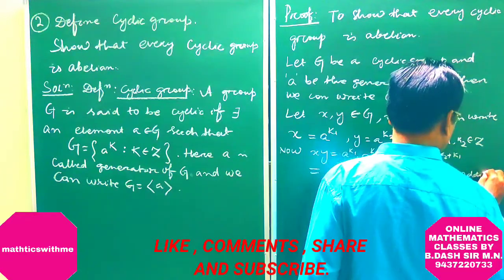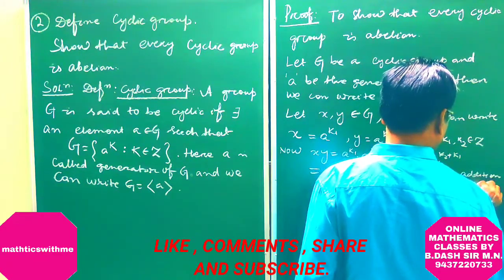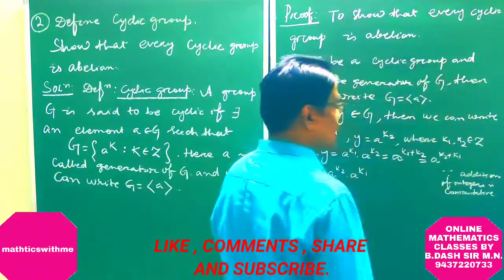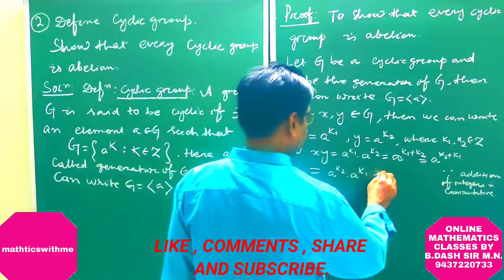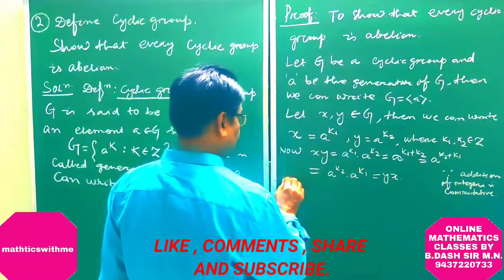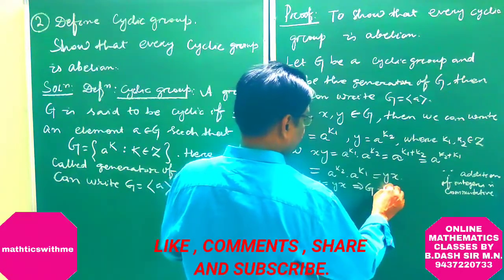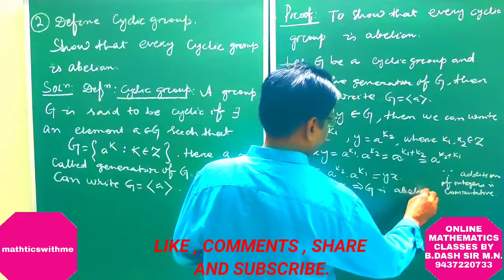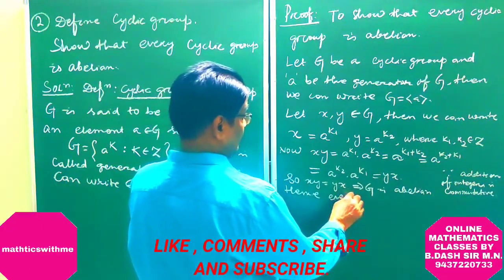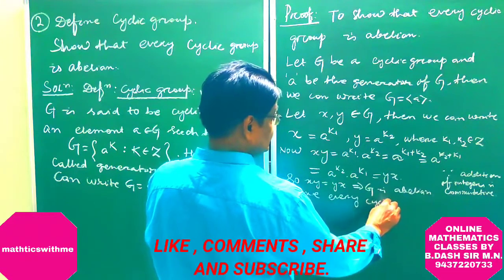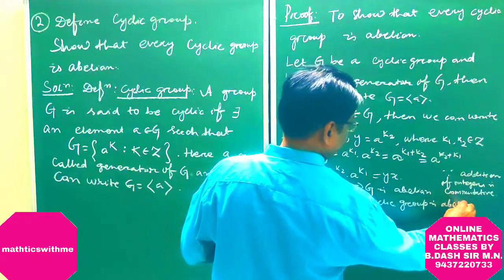Now, X times Y equals A to the power K1 times A to the power K2, which equals A to the power K1 plus K2. Since addition of integers is commutative, K1 plus K2 equals K2 plus K1. Therefore this equals A to the power K2 plus K1, which equals Y times X. So X times Y equals Y times X, which implies G is abelian. Hence every cyclic group is abelian.